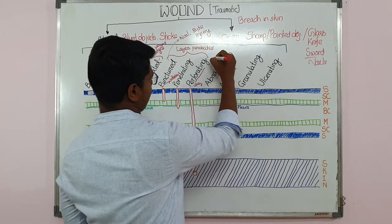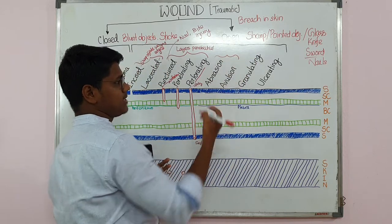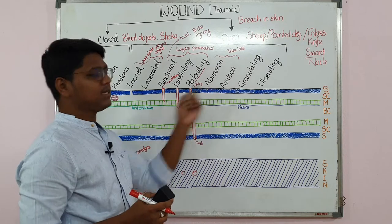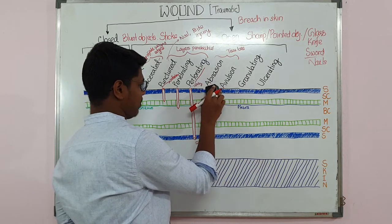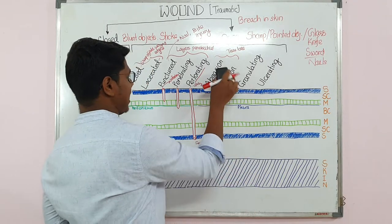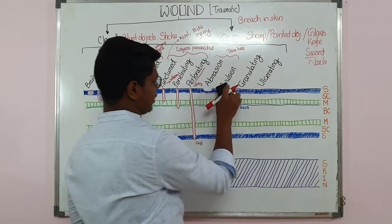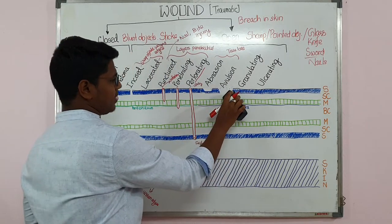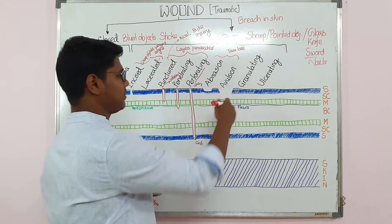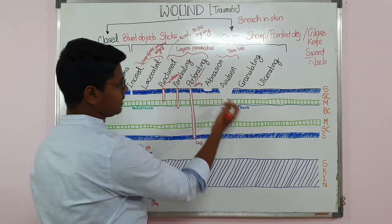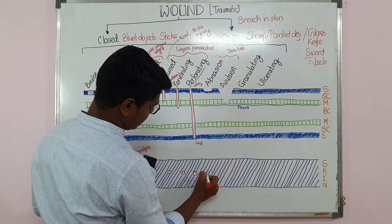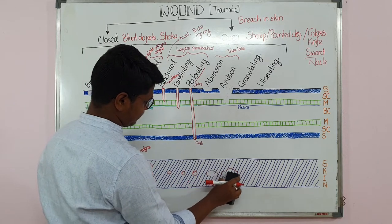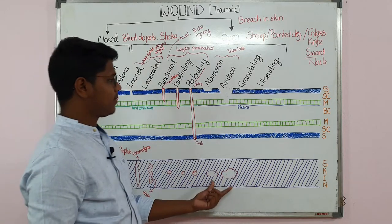Next, abrasion and avulsion are classified on the basis of tissue loss. In abrasion there is loss of epidermis or some part of dermis — in common terms, the skin is scraped off. In avulsion there is actual loss of tissue, which may extend up to the muscles. From above it may look the same as abrasion, but the depth of tissue loss can be appreciated by physical examination.